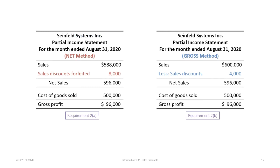We now move to requirement 2 — presenting partial income statements. Because the requirement is short, we present both the net and gross methods together for comparison. Under the net method, sales were recorded at $588,000 net of discount, and sales discounts forfeited were $8,000, giving net sales of $596,000. Cost of goods sold is $500,000, leaving gross profit of $96,000. Under the gross method, gross profit is still $96,000 and net sales are still $596,000.